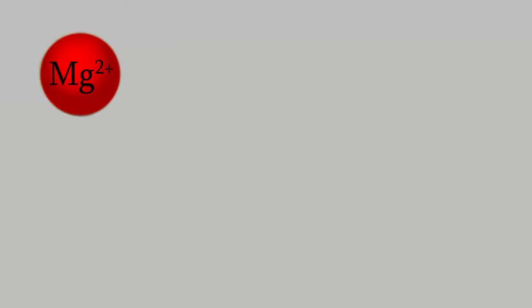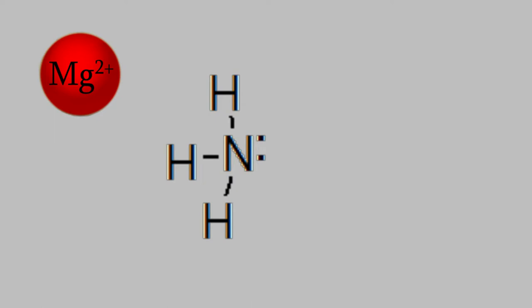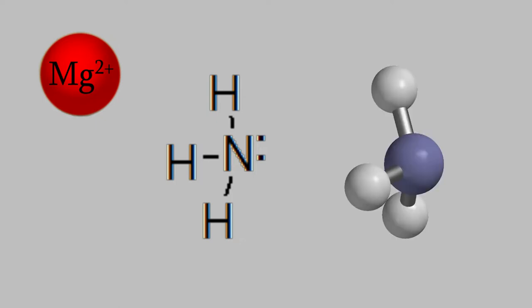For example, suppose we had a magnesium ion, which has a plus-two charge, and some ammonia molecules. If you remember what we learned about molecular geometry back in General Chem 1, you'll know that ammonia is a trigonal pyramidal molecule, which makes it asymmetric. If you've forgotten about molecular geometry, you might want to review videos 32 and 33 of General Chem 1, where we talked about that. Anyway, because ammonia is an asymmetric molecule, it's a dipole, so it has a negative side and a positive side.